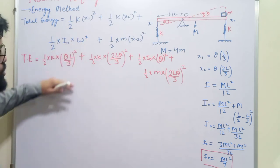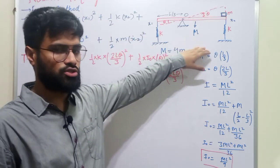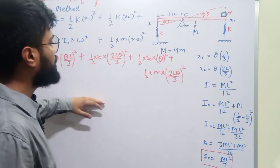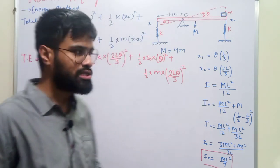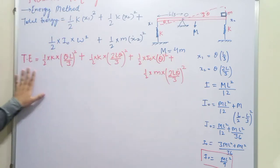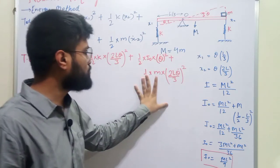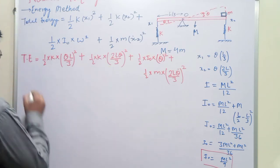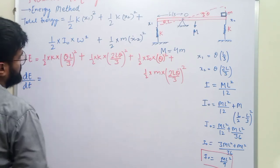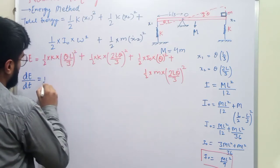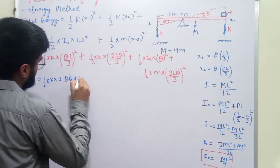In the energy method, we differentiate the total energy with respect to time, because by conservation of energy the total energy is constant. So the rate of change of total energy equals zero. Differentiating, we get: ½K·2θθ̇·L²/9 for the first spring term.